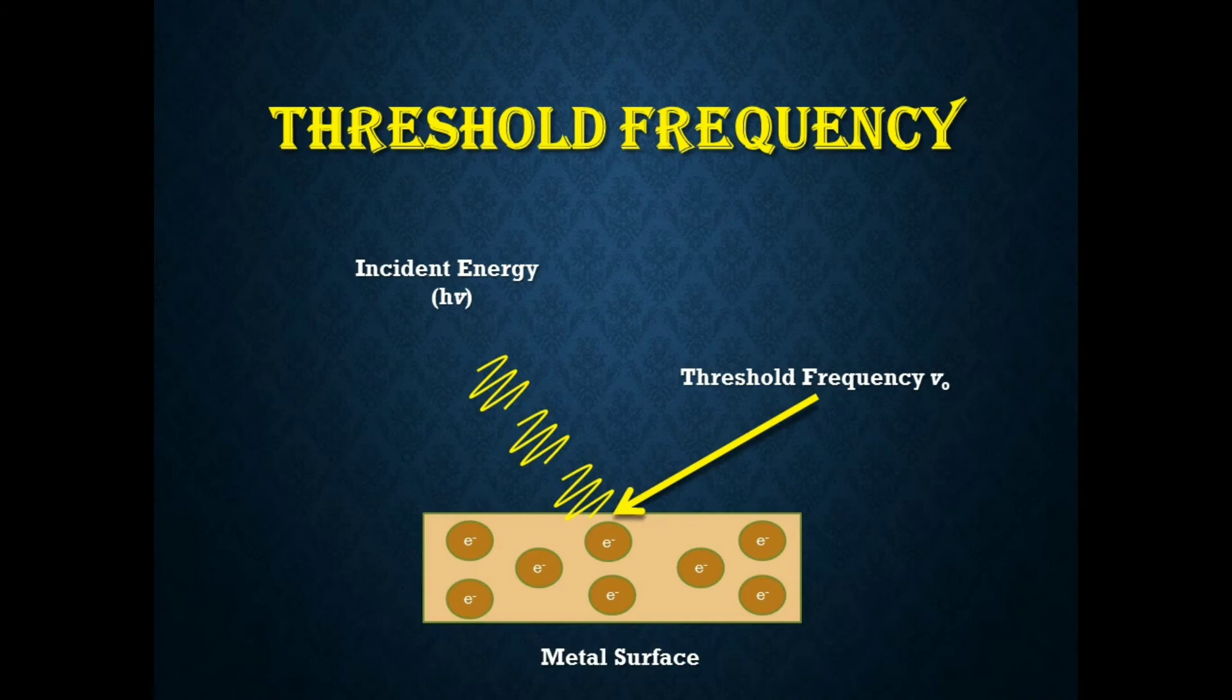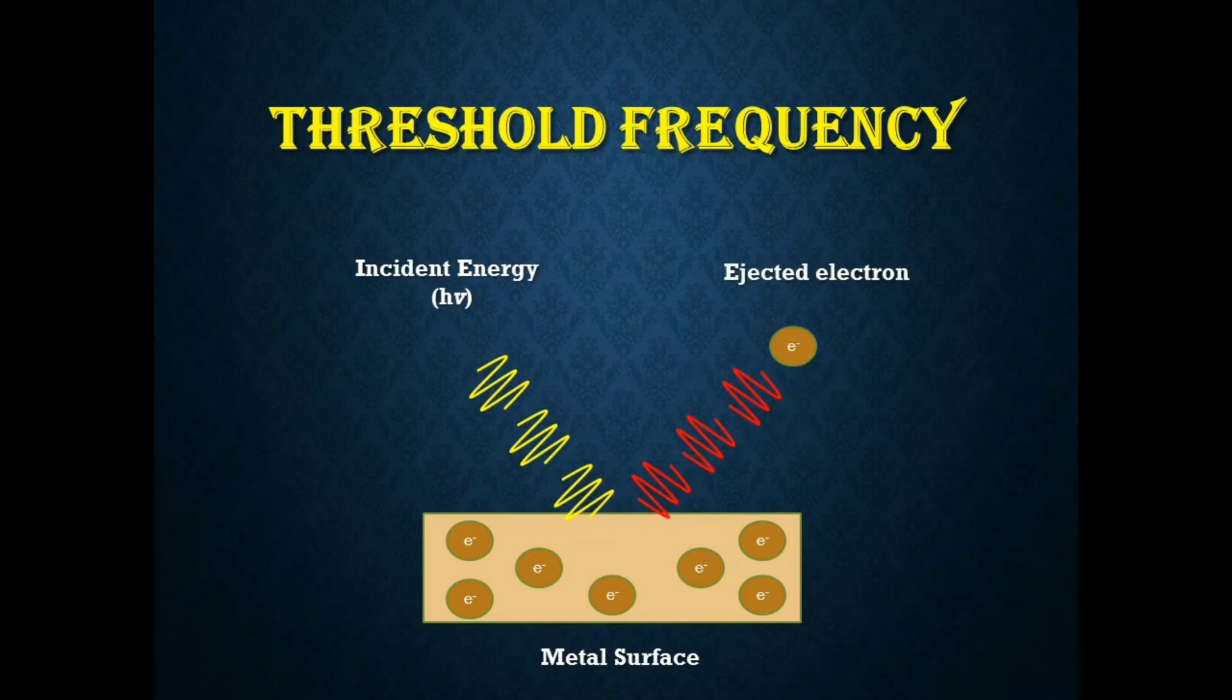...to eject an electron from that metal surface. Whenever incident energy has frequency equal to or greater than ν₀, only then there will be ejection. That ejected particle is called a photoelectron, and the phenomenon is called the photoelectric effect.